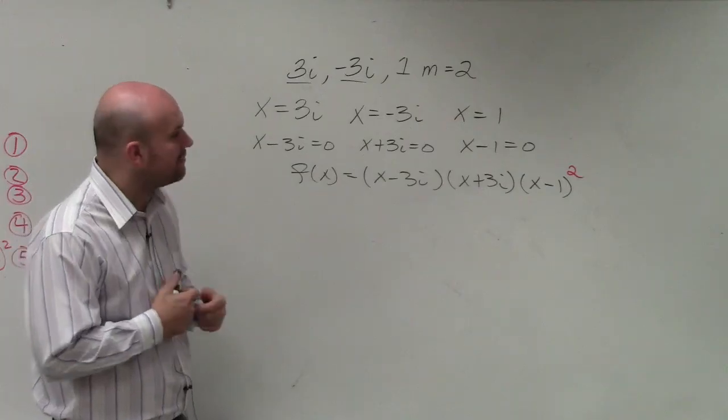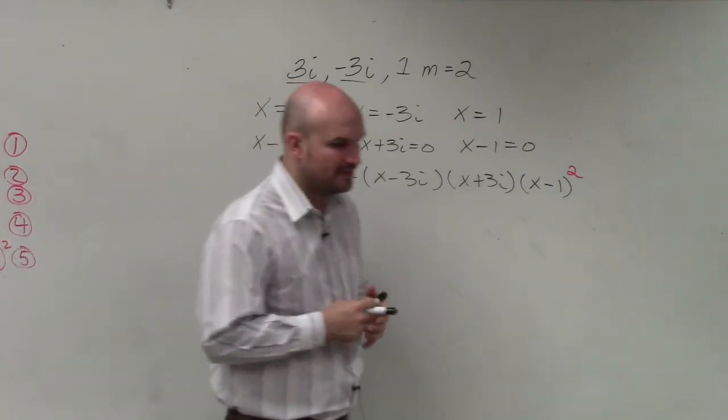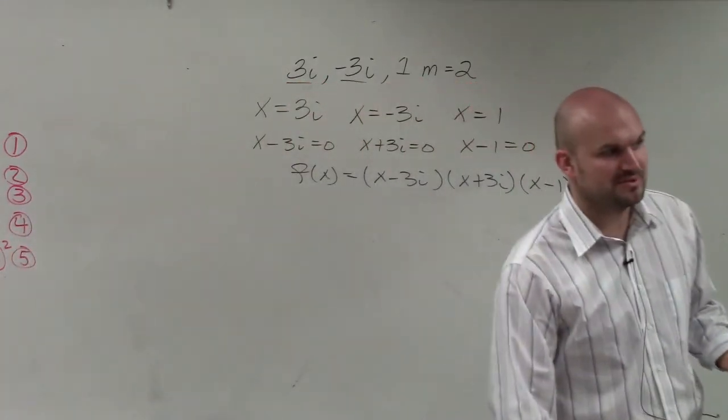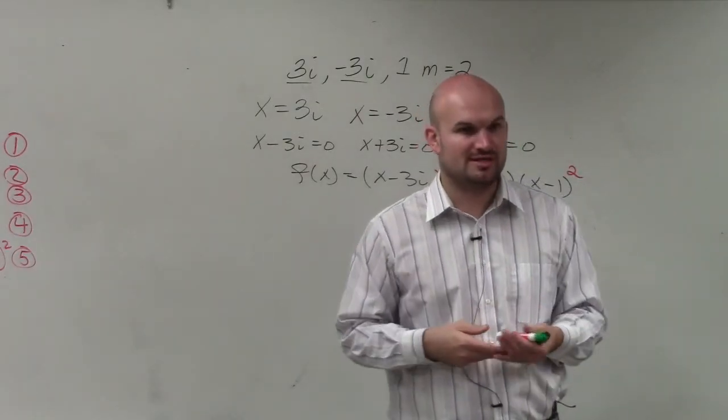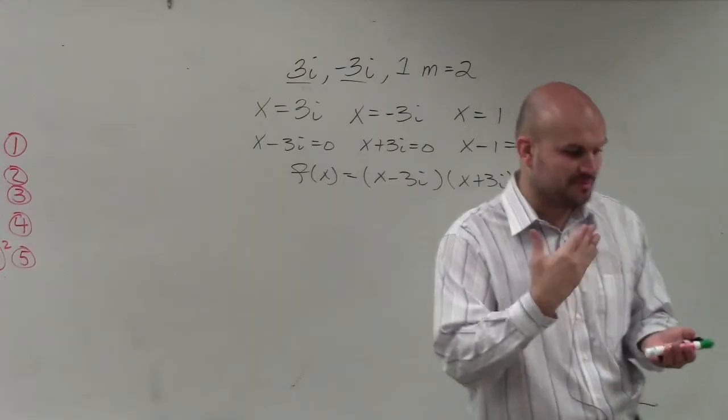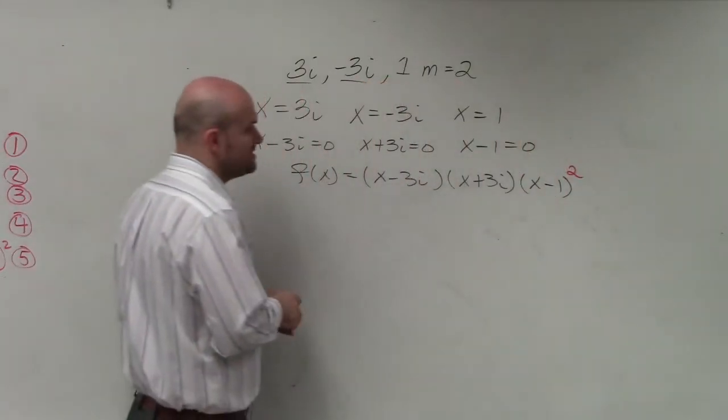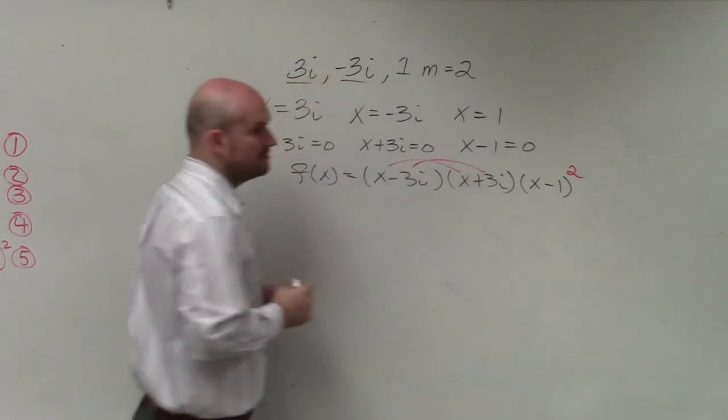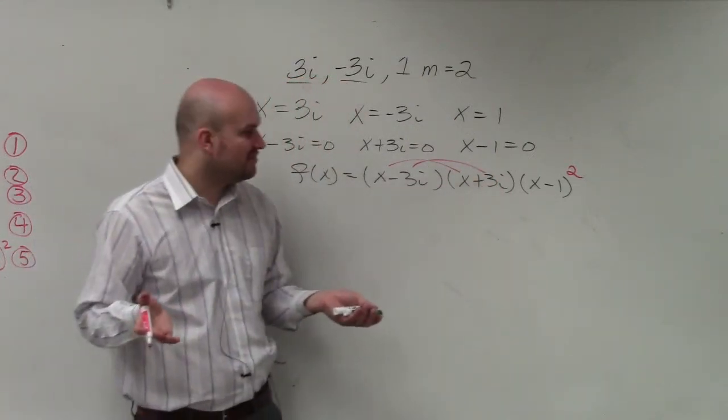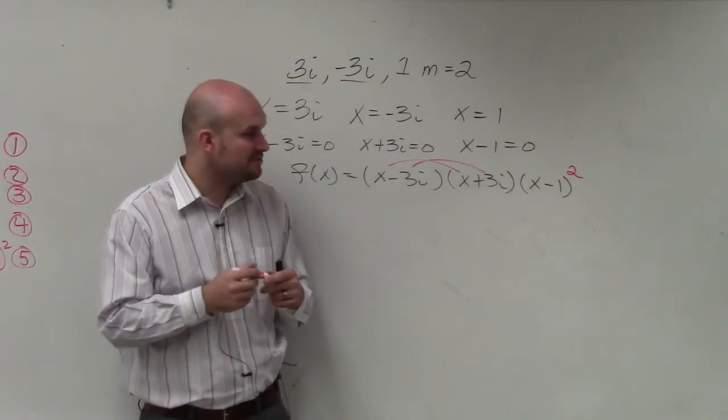So now we just multiply these out. Now, when multiplying these, I gave you guys a lot of these problems, because you guys don't really get good at things, or you don't start seeing shortcuts until you actually do problems over and over. And what you guys need to see about these is these are the difference in two squares. I don't need to multiply all the FOIL.